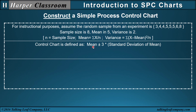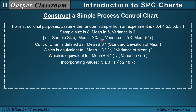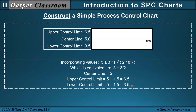The control chart is defined as the mean plus or minus 3 standard deviations of the mean. The standard deviation is equal to the square root of the variance of the mean, which is the same as the square root of the variance of the random variable x divided by n. Incorporating the values of the mean, variance, and sample size, we have the expression 5 plus or minus 3 halves. The center line is 5, the upper control limit is 6.5, and the lower control limit is 3.5, and that defines our simple process control chart.